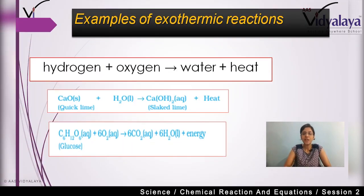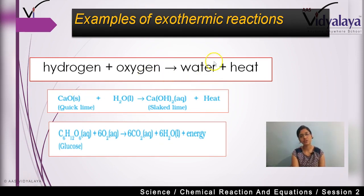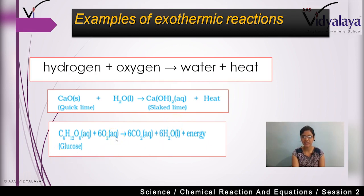For example: hydrogen and oxygen react to form water, and heat is released. Similarly, when quick lime (CaO) reacts with water, slaked lime is formed and heat is also produced — so heat is given out. Also, when glucose and oxygen react, carbon dioxide, water, and energy in the form of ATP are produced — and this energy we consider as heat. So these are all examples of exothermic reactions — reactions in which heat is liberated.